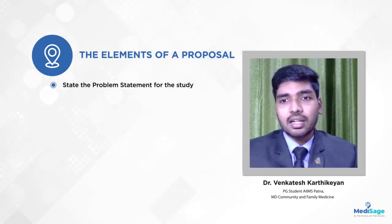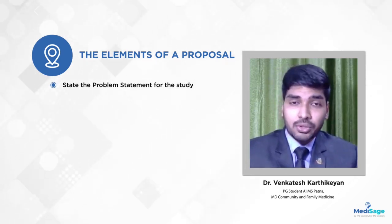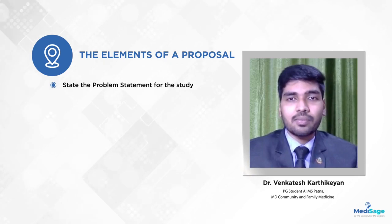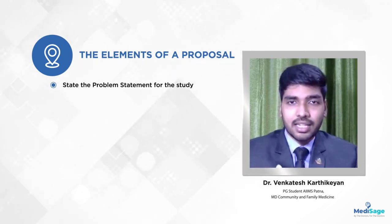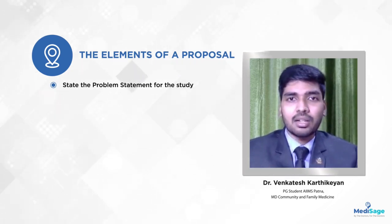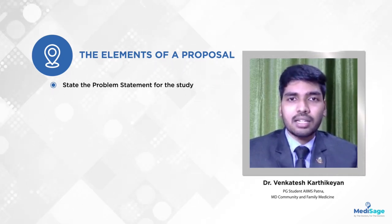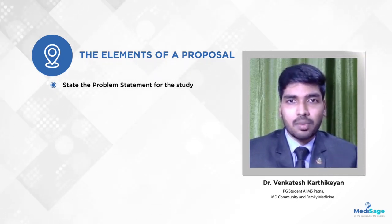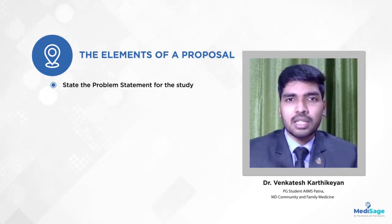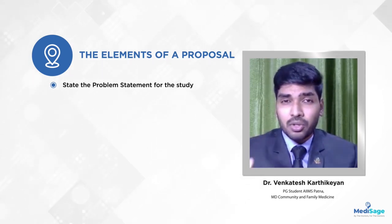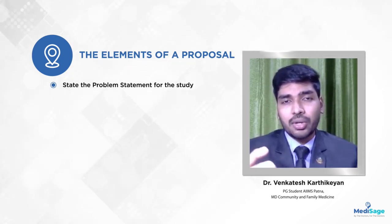You should mention the glycemic control at each of these levels — worldwide, nationwide, statewide, and in your city. Which parameters are available on the internet and on PubMed, you should identify those and include them in the problem statement. In simple terms, the problem statement describes the magnitude of the problem you are going to address.